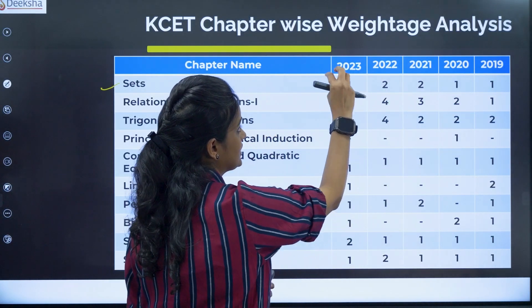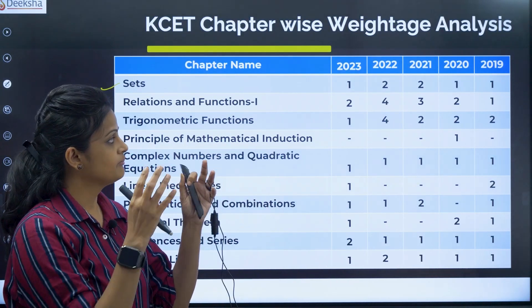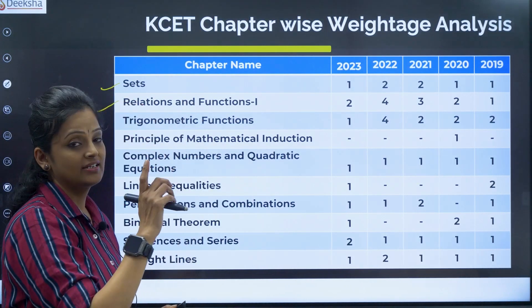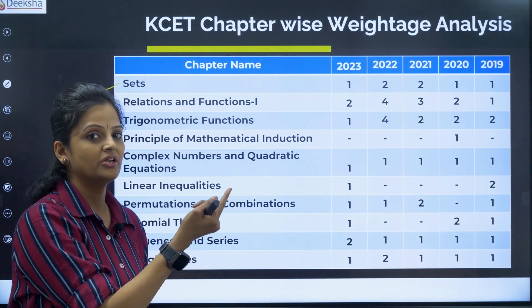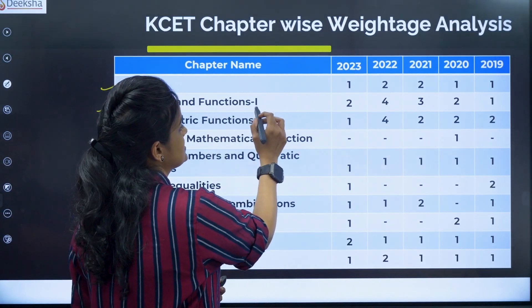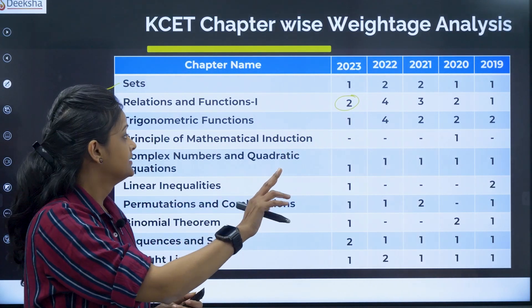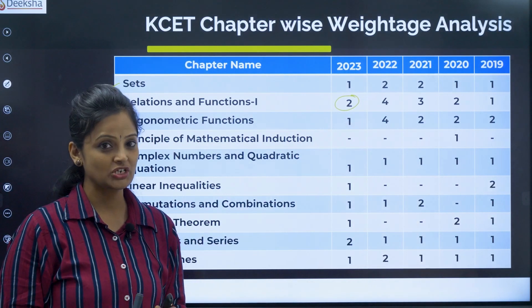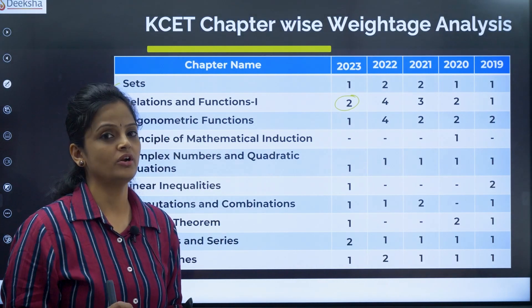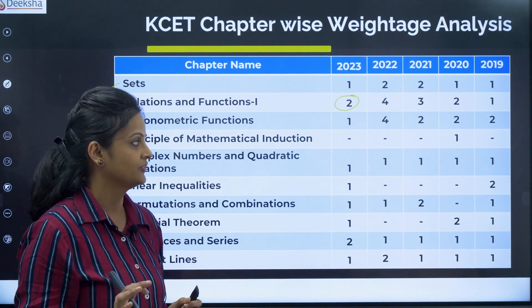Comparatively, the Sets chapter is less in 2023 — only one question because it is a long chapter. And Relations and Functions part one, that is a first year topic. The same chapter is in second PUC also, where we can expect three questions. In this first year topic we are having two questions on average. Third chapter is Trigonometric Functions — very, very important. This chapter will give you a good hold for differentiation and integration. So don't neglect this chapter.